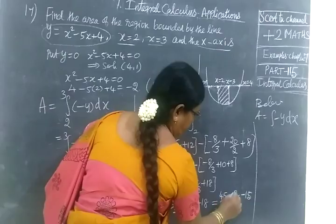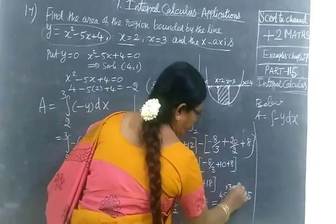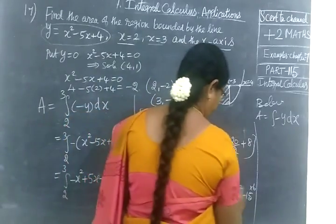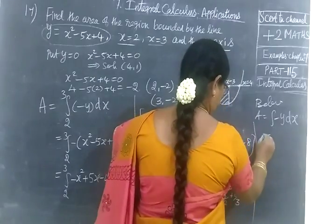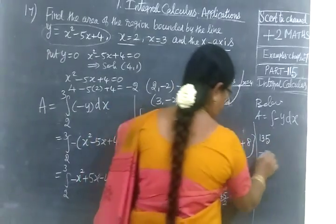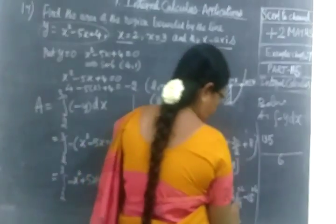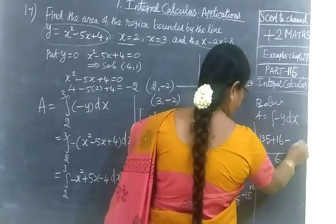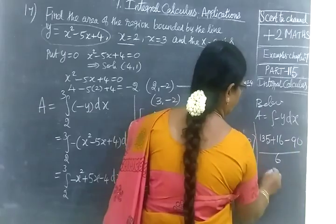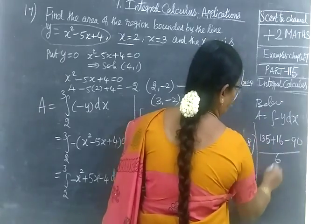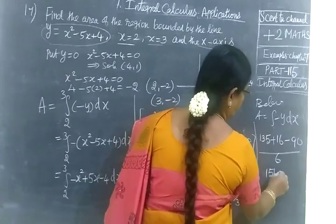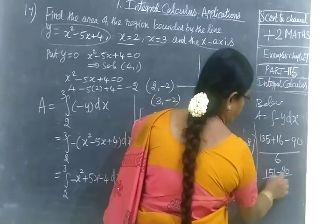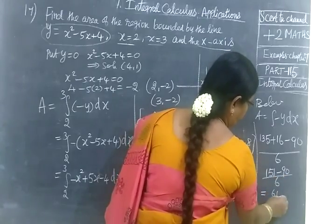Taking LCM as 6: 6 applied to each term. Minus 135 plus 16 minus 90, all over 6. Then 151 minus 90 by 6 equals 61 by 6.